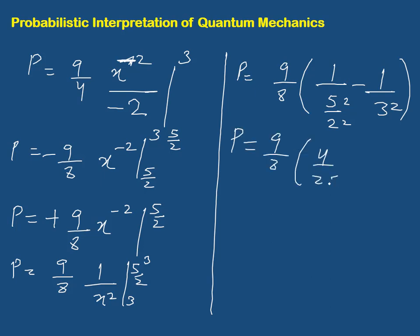Therefore, the probability of finding the particle in the region from 5/2 to 3 is 0.055, or approximately 5.5%.